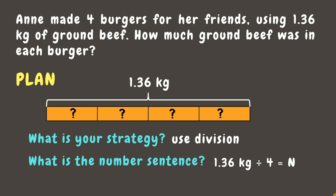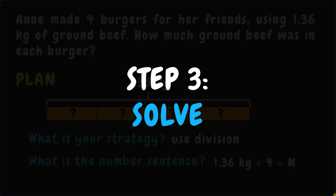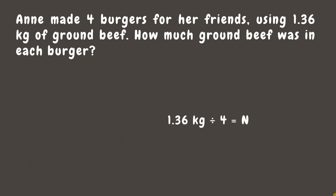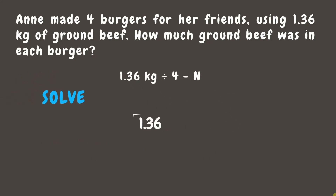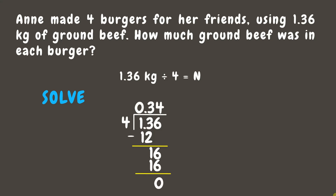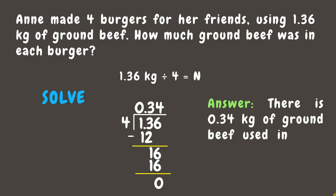Now that we have our plan, let's proceed to Step 3: Solve. Let us now divide 1.36 by 4. Our answer is 0.34. This means that the amount of beef in each burger is 0.34kg.